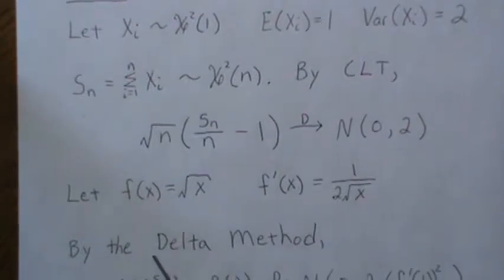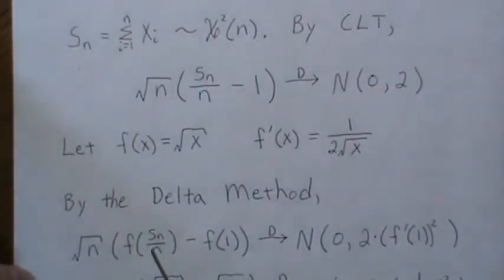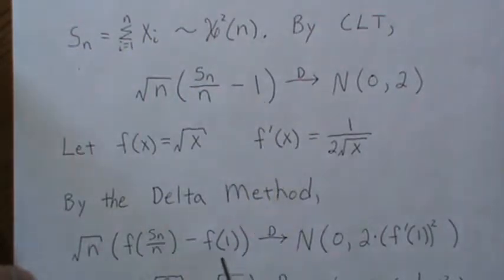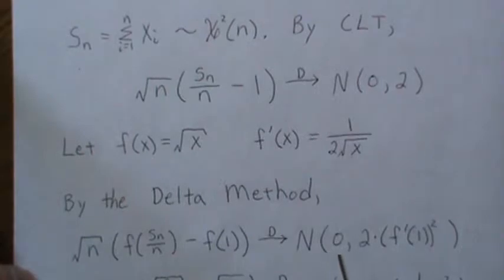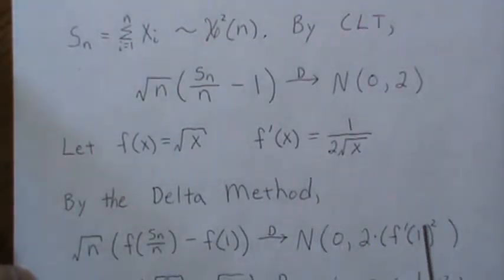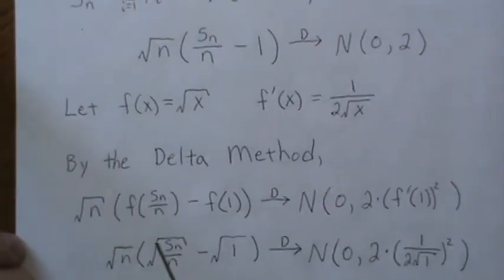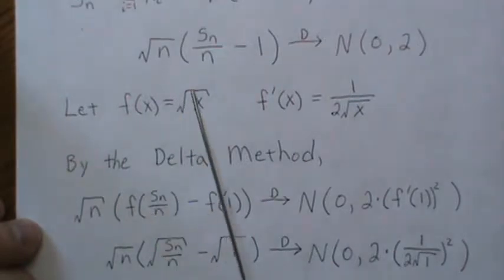We take the function of this, which is what this is, and that approaches the normal distribution with the same variance, but the variance is multiplied by the first derivative squared evaluated at this mean. So that's it.